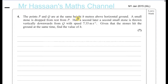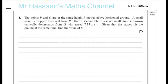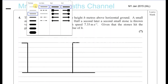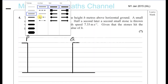The points P and Q are the same height, H, above horizontal ground. So here you have your horizontal ground, and here you have your point P, and here you have your point Q. P and Q are both the same distance above horizontal straight ground.